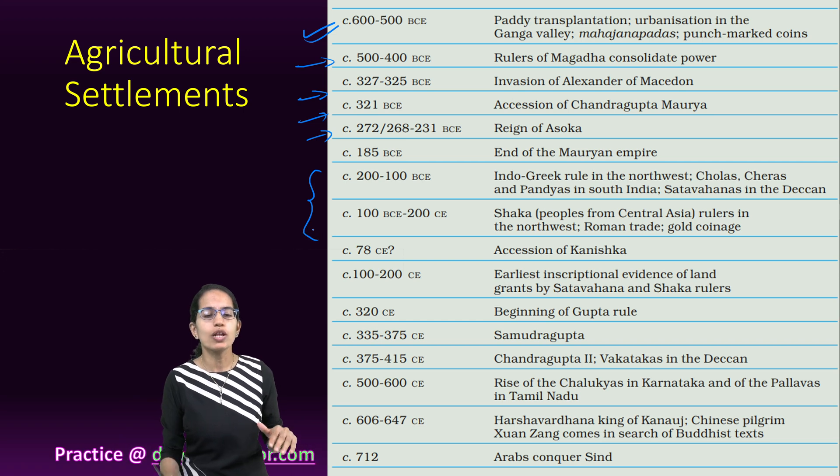In the Sangam literature of the south, large landholders were known as Velalar, plowmen were known as Uzzhavar, and slaves were known as Adimai. These names in Sangam literature and the northern term Gahapati are important texts. In the next section of the same theme, we will talk more about how inscriptions were deciphered and what the limitations were to deciphering these inscriptions.